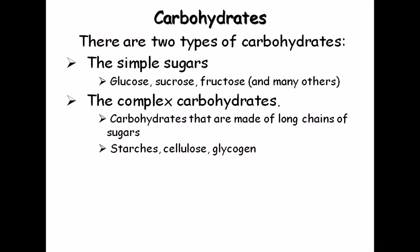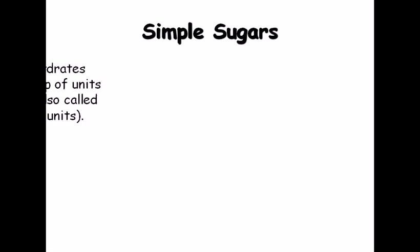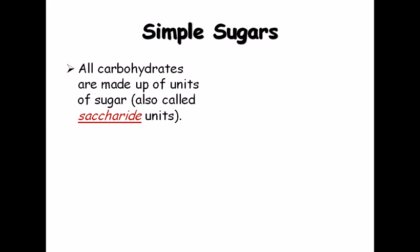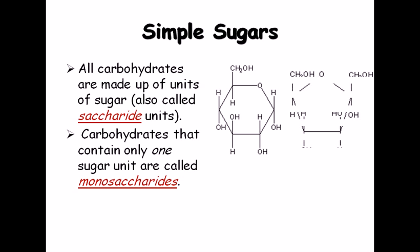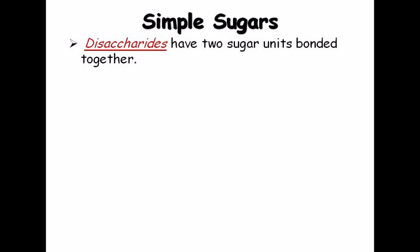Polysaccharides form complex carbohydrate structures like starches, cellulose, and glycogen. Starches are mostly found in plants, and glycogen is found in the muscle tissues of animal cells. Among simple sugars, all carbohydrates are made up of unique sugar units called monosaccharide units. Carbohydrates that contain only one sugar are called monosaccharides — examples include glucose and fructose.